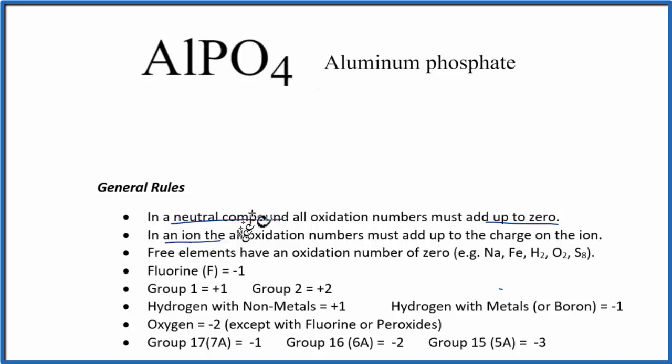And in the ions, like PO4 3 minus, the oxidation numbers add up to the charge on the ion. So this whole thing here would be minus 3. So the aluminum would have to be plus 3 for it to be a neutral compound, for everything to add up to zero. So I'm comfortable that the aluminum is plus 3.